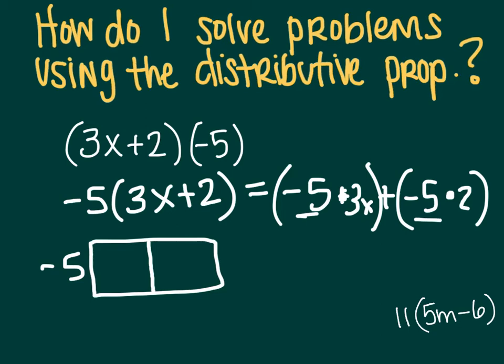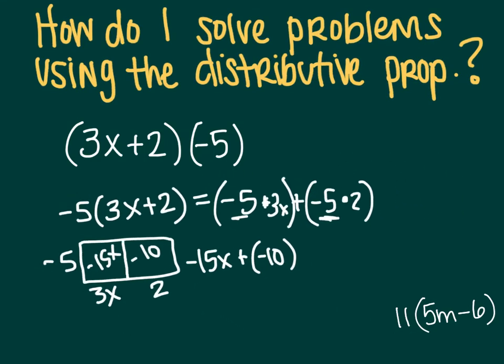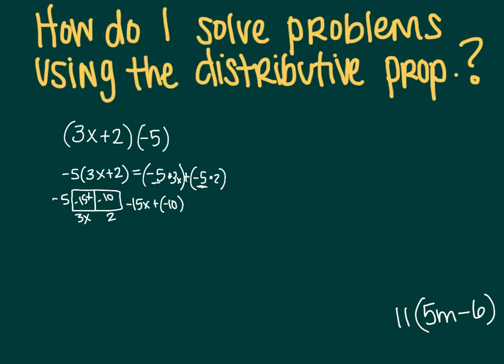Now I can find the area inside the box, which would be negative 15 x and negative 10. Add those together, negative 15 x plus negative 10. Again, you cannot combine a variable with a number, and so that is as far as you go. You stop there after you add that adding sign.